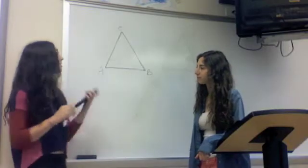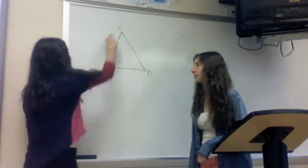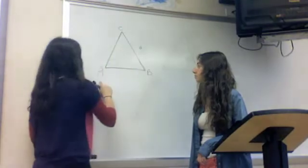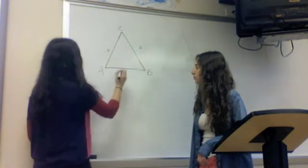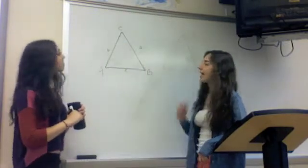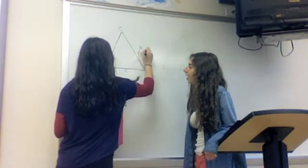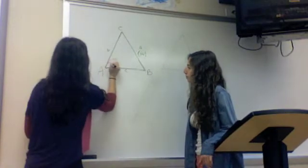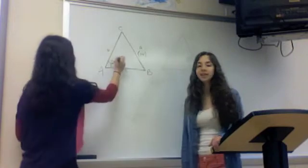So here we have a triangle — Triangle ABC. Side A is opposite angle A, side B is opposite angle B, and side C is opposite angle C. Let's say side A is 14, angle A is 25 degrees, and angle B is 75 degrees.